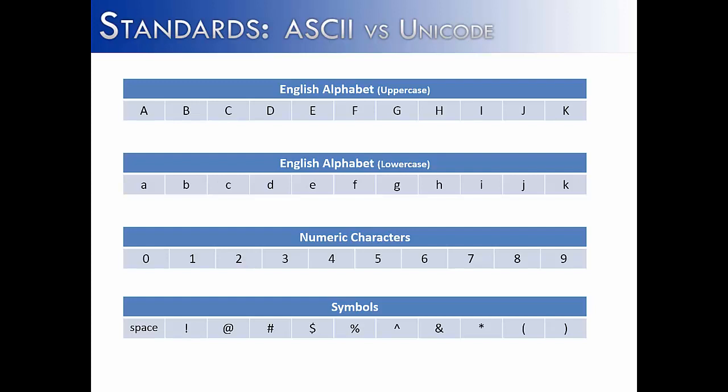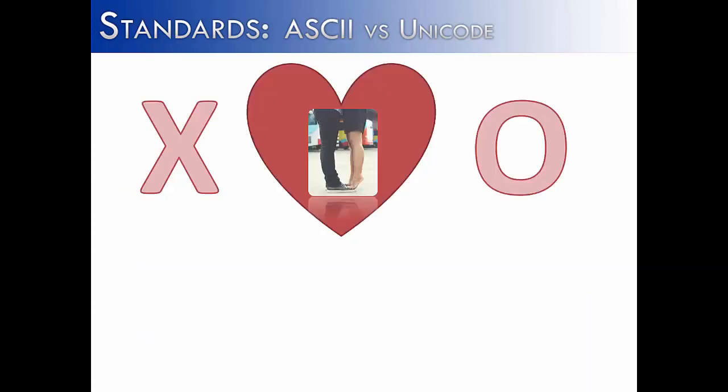Let's talk about ASCII and Unicode and get the underpinnings of character, and then in another video we'll talk about how the character data type is used. Let's say that I had a girlfriend and I was in love, and I loved my girlfriend so much that I wanted to write a language with her. We wanted to communicate in this language, and because we were so in love, we were going to call it the language of love. How better to write the language of love than to use X's and O's?